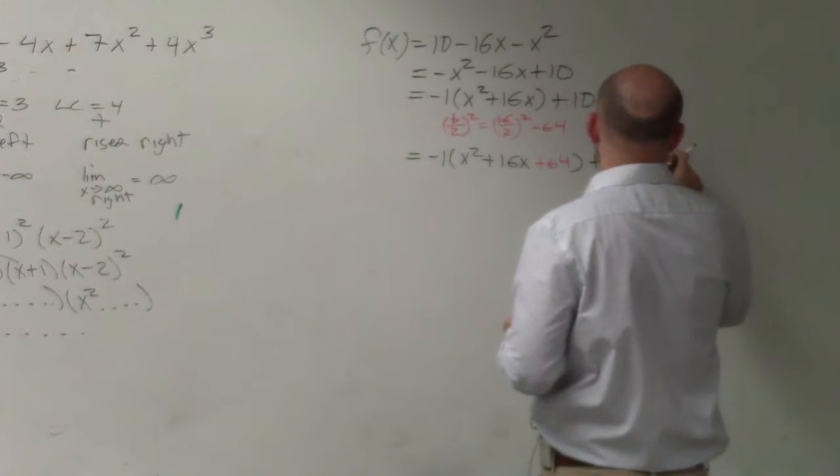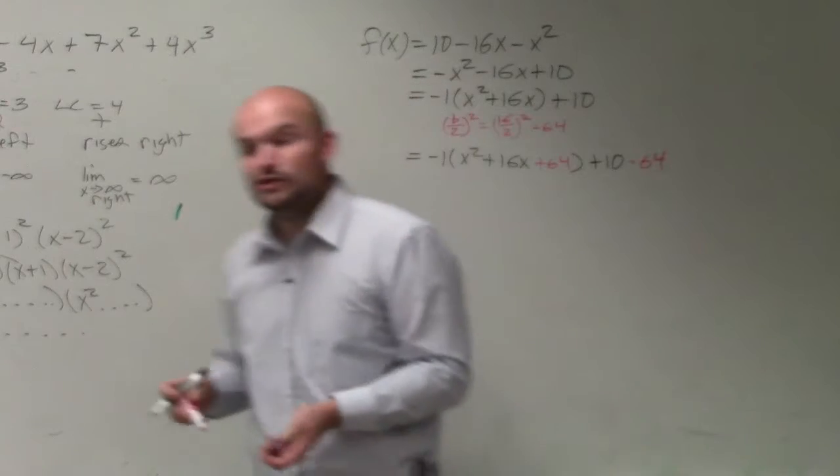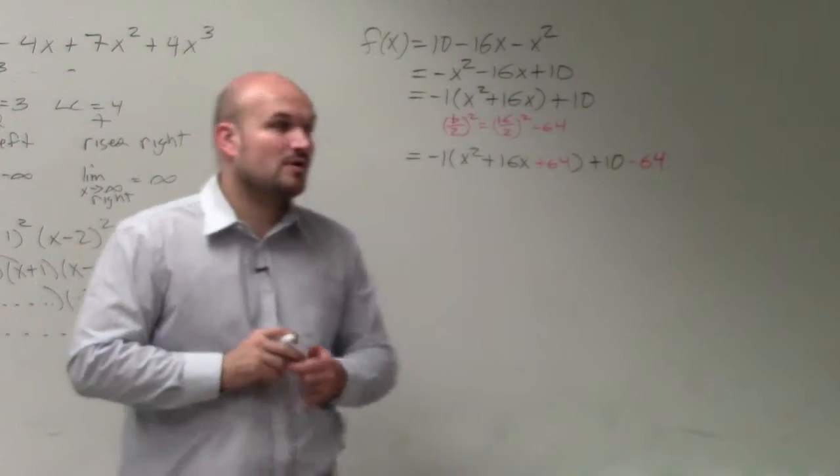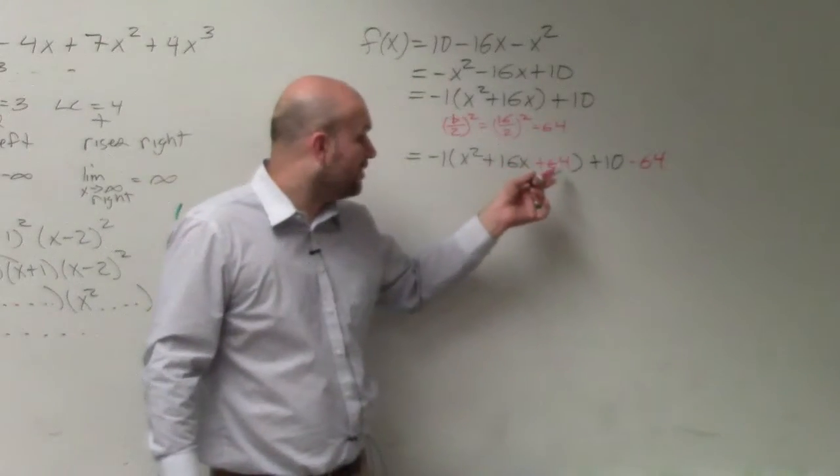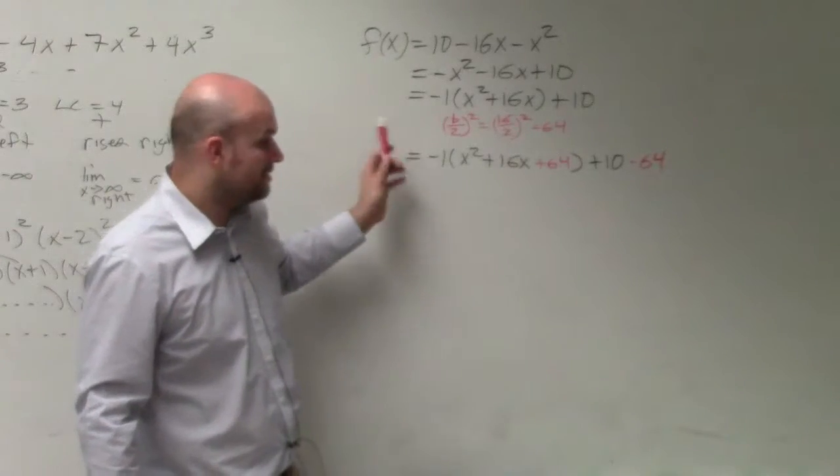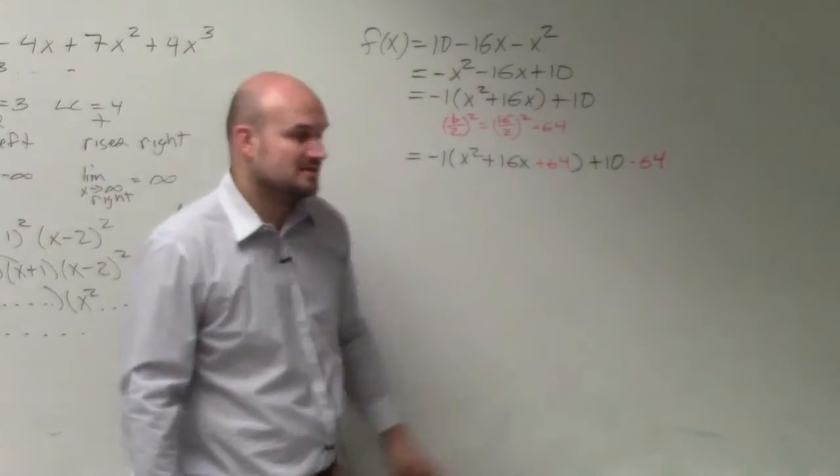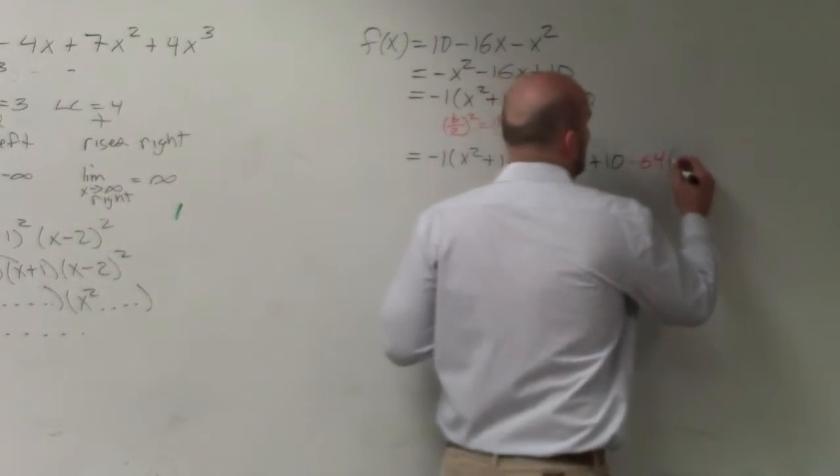So I have to subtract a 64, but we have to be careful. You really actually didn't add the 64 at all. You added a 64 that is multiplied by a negative 1. So when you subtract a 64, you also have to multiply it by a negative 1.